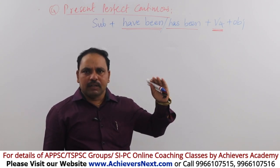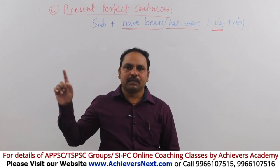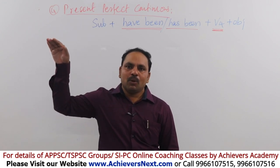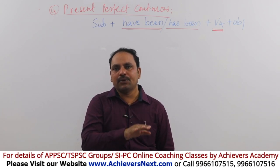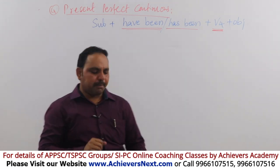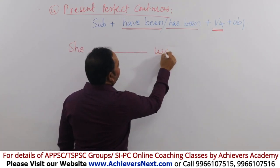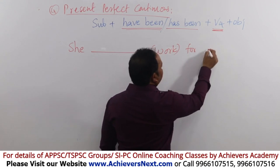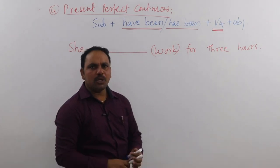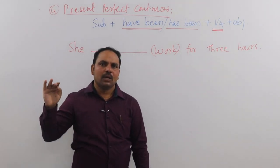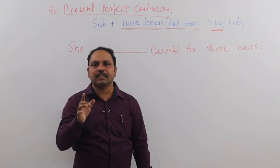An action that started in the past and is still continuing — to express that, we use present perfect continuous tense. For example, 'she work for three hours.' She started working three hours ago and is still continuing. The action started in the past and is still going on, so we use present perfect continuous tense.